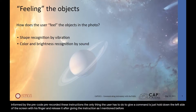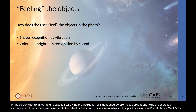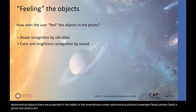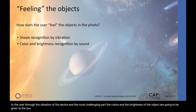This application helps users feel astronomical objects. Astronomical photos — for example, planet photos, galaxy photos, star photos — are projected on the screen, and the user discovers what's in the screen in two steps. The shape recognition of the projected object is given through the vibration of the device, while the colors and brightness of the object are conveyed by translating the colors into sound.